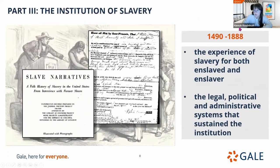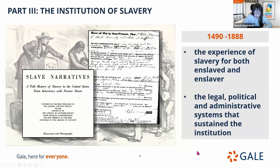Part 3 is the Institution of Slavery, spanning from 1490 to 1888. This covers the experience of slavery for both the enslaved and the enslaver, with primary source documents sharing what this institution was like. We're looking at this from a legal, political, and administrative perspective — really what helped sustain that institution throughout this time period. This consists of over 1.2 million different pages, including legal documents, plantation records, personal accounts, newspapers, and government documents.